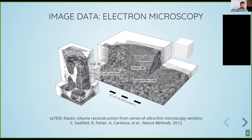Most datasets in this context use a technology called serial section transmission electron microscopy. While this sounds complicated, it essentially means we cut a sample into very thin slices — in the case of the fruit fly brain, about seven thousand individual slices — image them individually at four nanometers per pixel on the plane, while each plane is about 40 nanometers thin. This results in large amounts of data that isn't always easy to handle, and the data has problems like losing thin sections, folds, and so on, which the software has to account for.